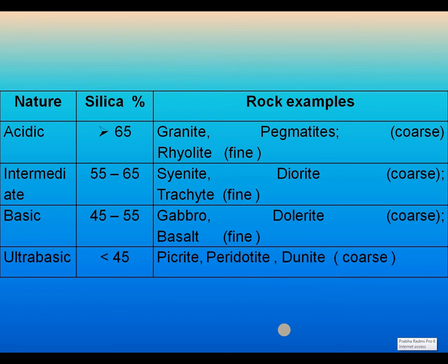In case of acidic Igneous Rocks, the silica percentage is more than 65%. In case of intermediate Igneous Rocks, the silica percentage is between 55 to 65%. Ultrabasic Igneous Rocks are characterized by less than 45% silica percentage, and the important rocks are shown as examples in the picture.